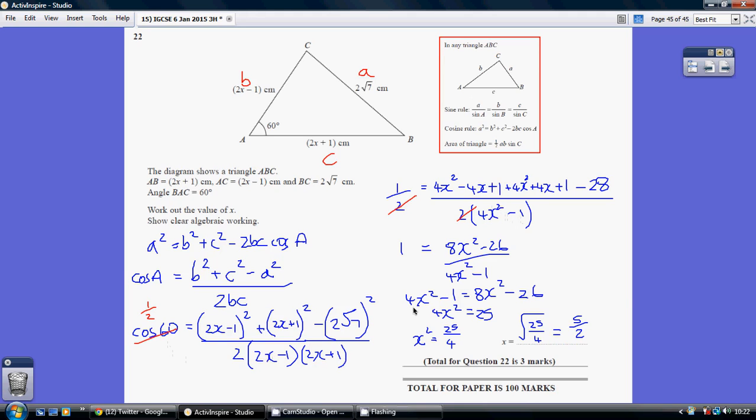So a half equals this. Now first thing to do, I've just cancelled out the dividing by 2. And I've gathered up my terms in the numerator. So I've got 8x squared, the x's cancel, and I've got a minus 26. So 1 equals this. Multiply through by 4x squared minus 1. I get 4x squared minus 1 equals 8x squared minus 26.